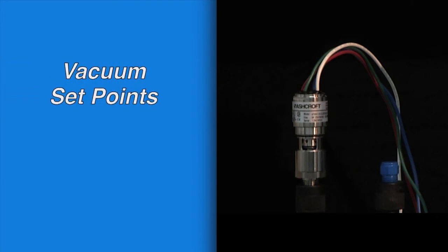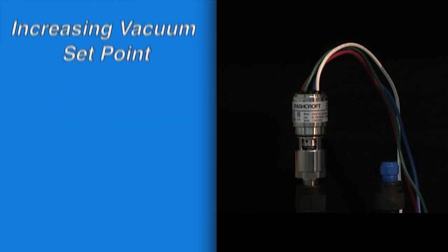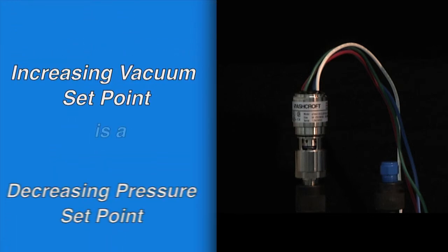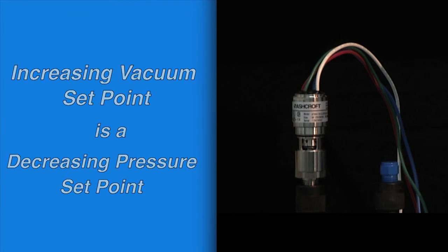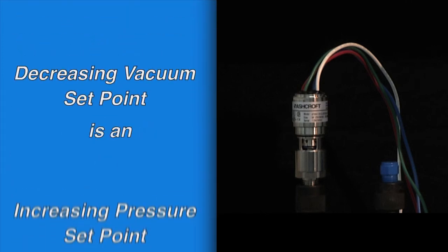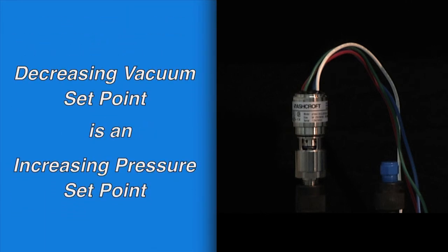For set points on vacuum rain switches, it is best to think of the set point as a negative pressure. So an increasing vacuum set point is a decreasing pressure set point. And a decreasing vacuum set point is an increasing pressure set point.